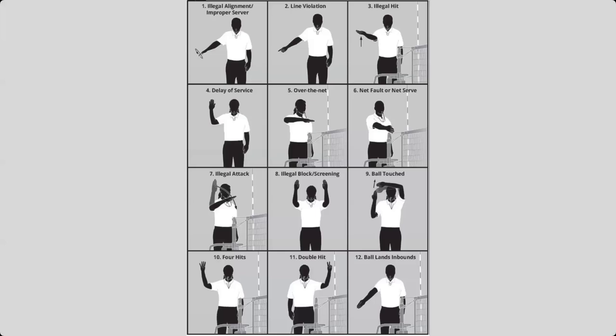A lot of these signals are probably ones that you've seen before. Others maybe not, but they'll probably make sense when you actually look at them. The first signal is illegal alignment or improper server. If this is happening, it'll either be the R1 looking at the serving team, and they are who they are supposed to be responsible for before the point. They are watching the serving team and checking to make sure they are in the proper alignment. A lot of times it's hard to figure out if you have an improper server. You usually depend on someone keeping score. But if you know that that's the improper server, that is your signal.